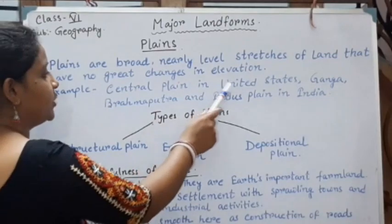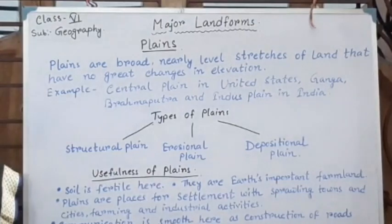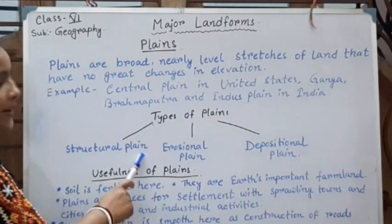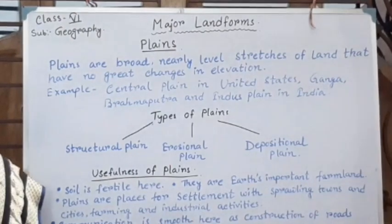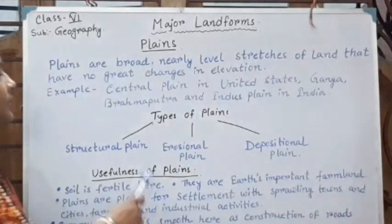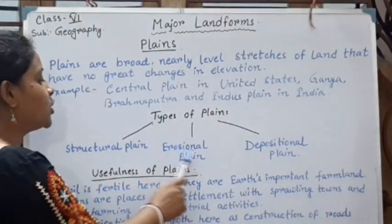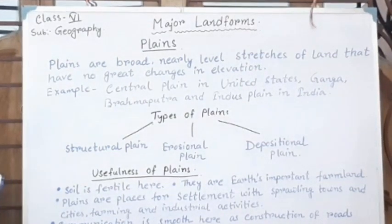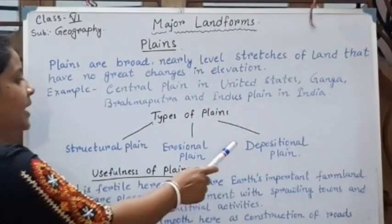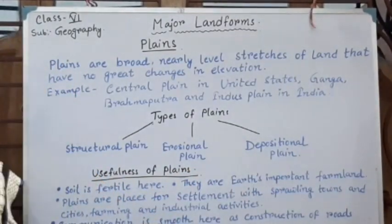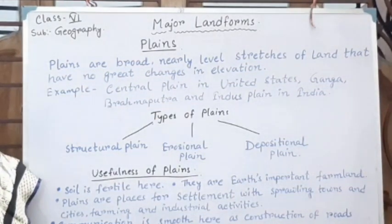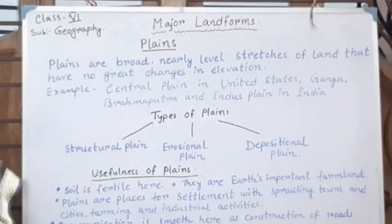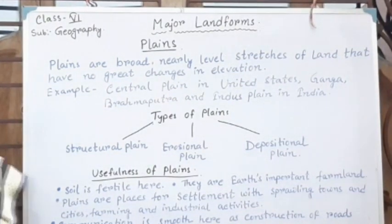Examples of plains: the Central Plains in the United States, and the Ganga, Brahmaputra, and Indus Plains in India. Types of plains: there are three types. Number one is structural plains — formed due to endogenic forces. Number two is erosional plains — formed because of erosion, where erosional agents erode the land and form a plain. Next is depositional plains — formed because of the deposition of material brought by erosional agents. Apart from these, there are other types of plains such as river plains, delta plains, coastal plains, and glacial plains.